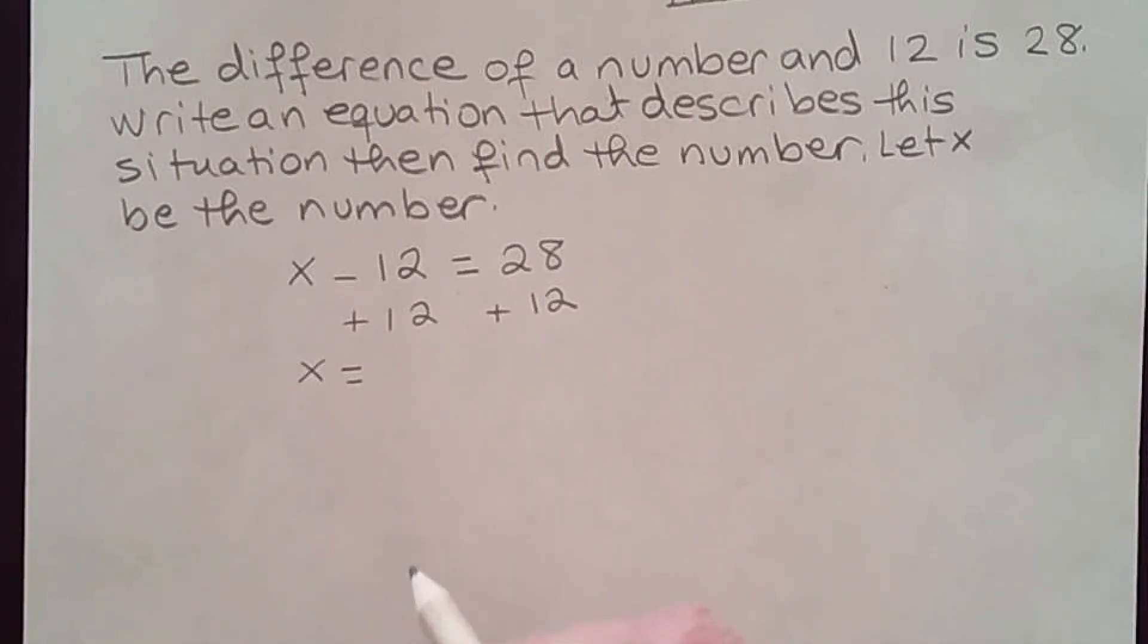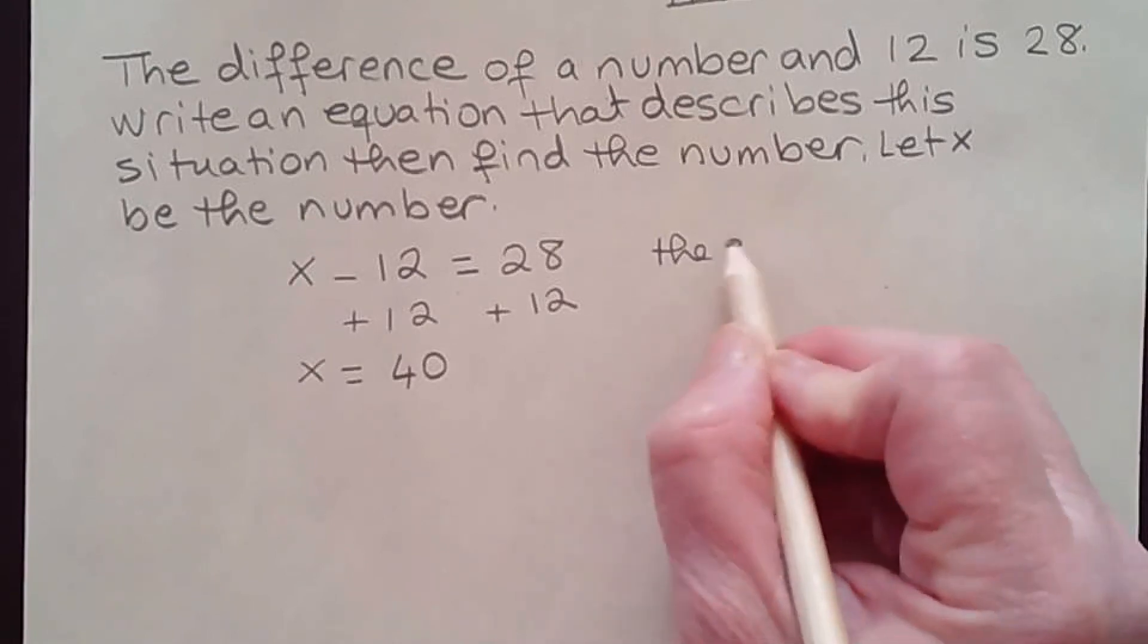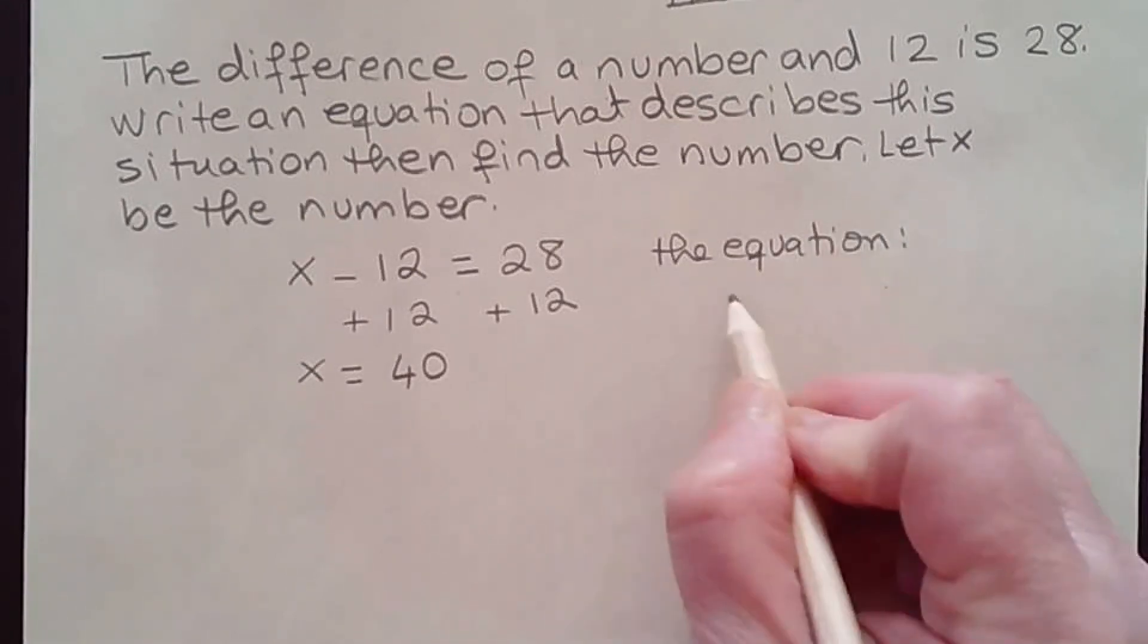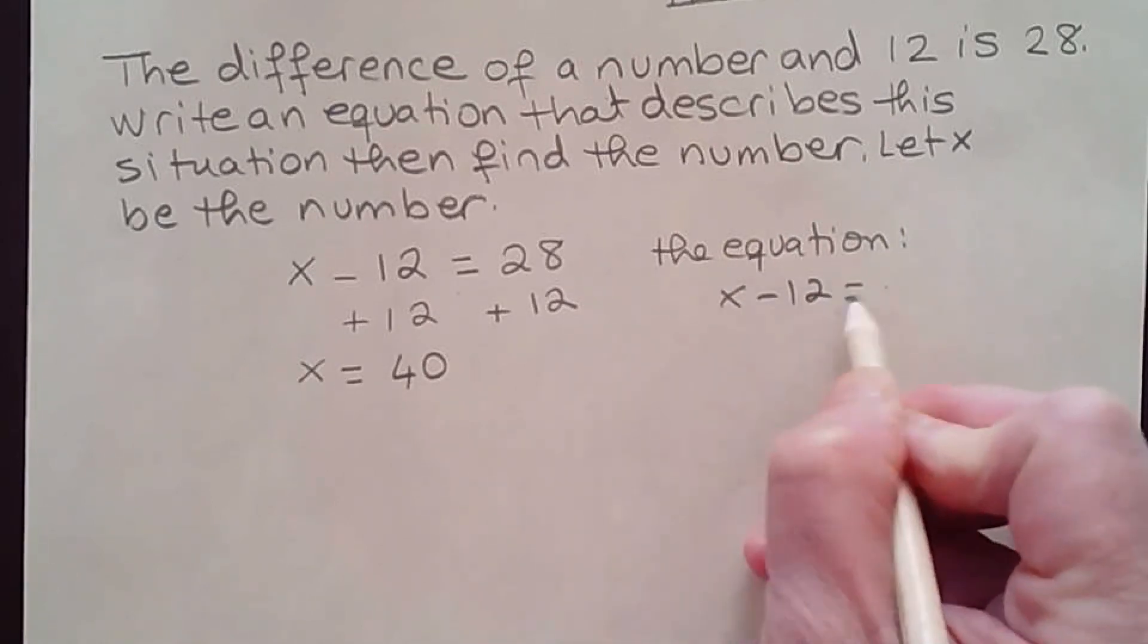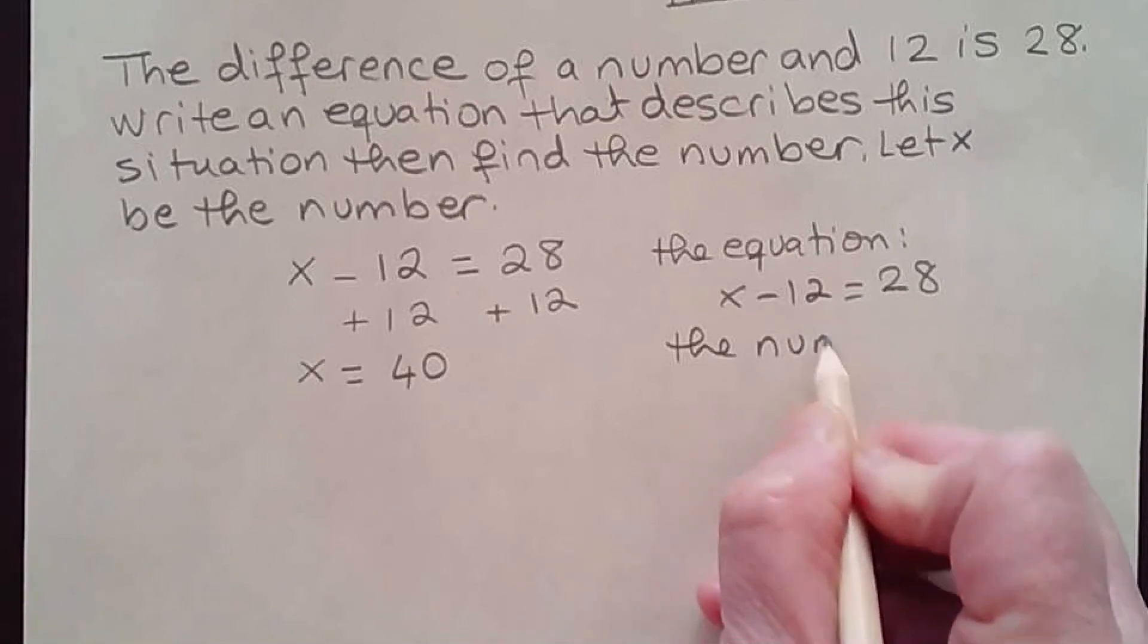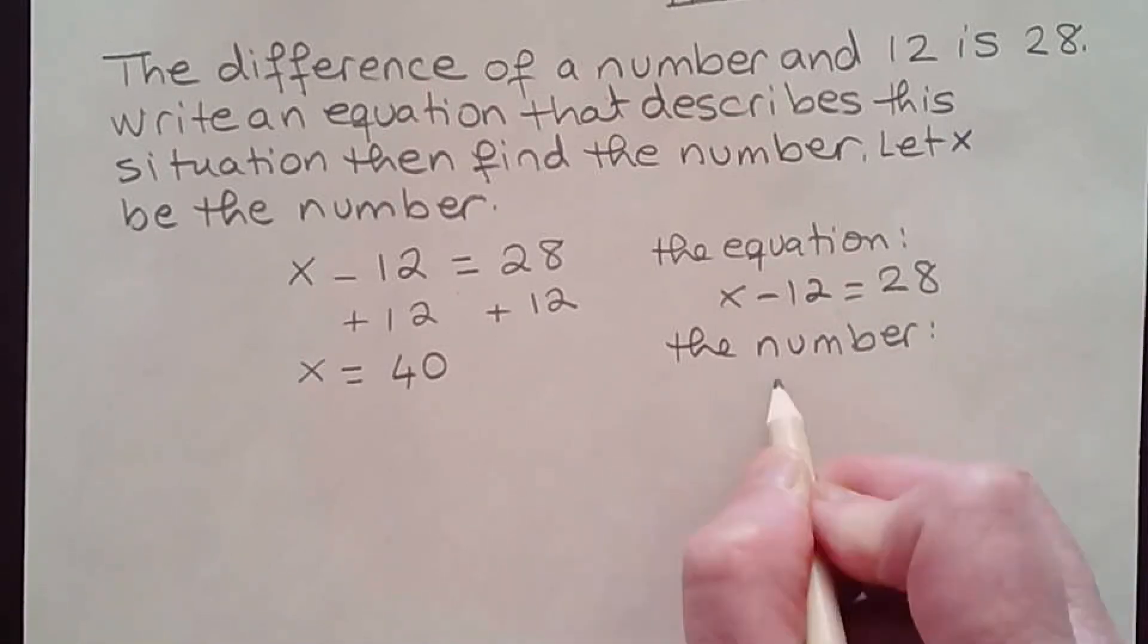So the number is 40. The equation that they wanted is x minus 12 equals 28, and the number is 40.